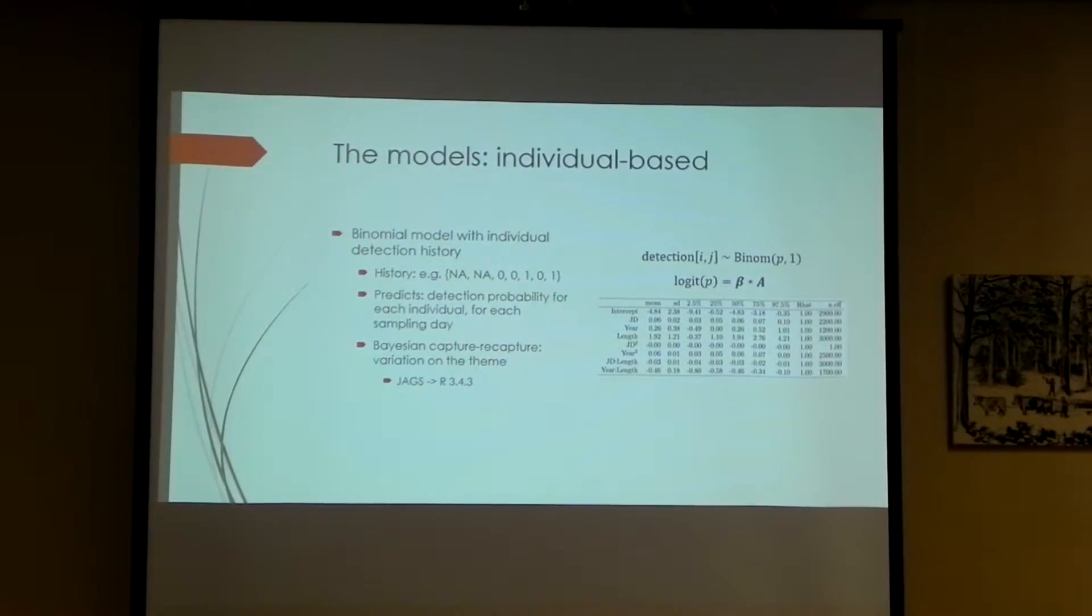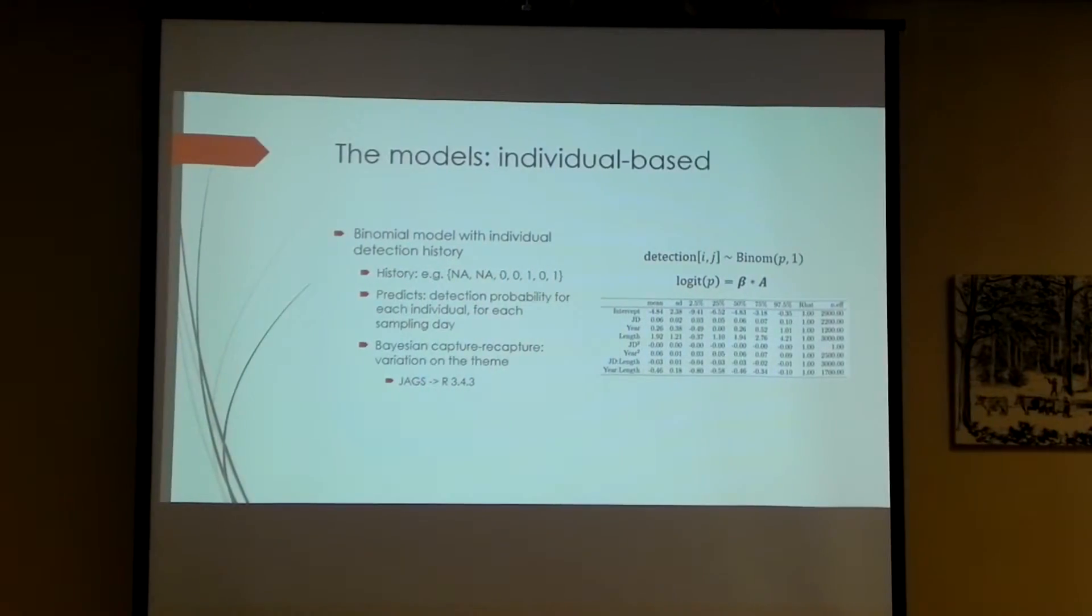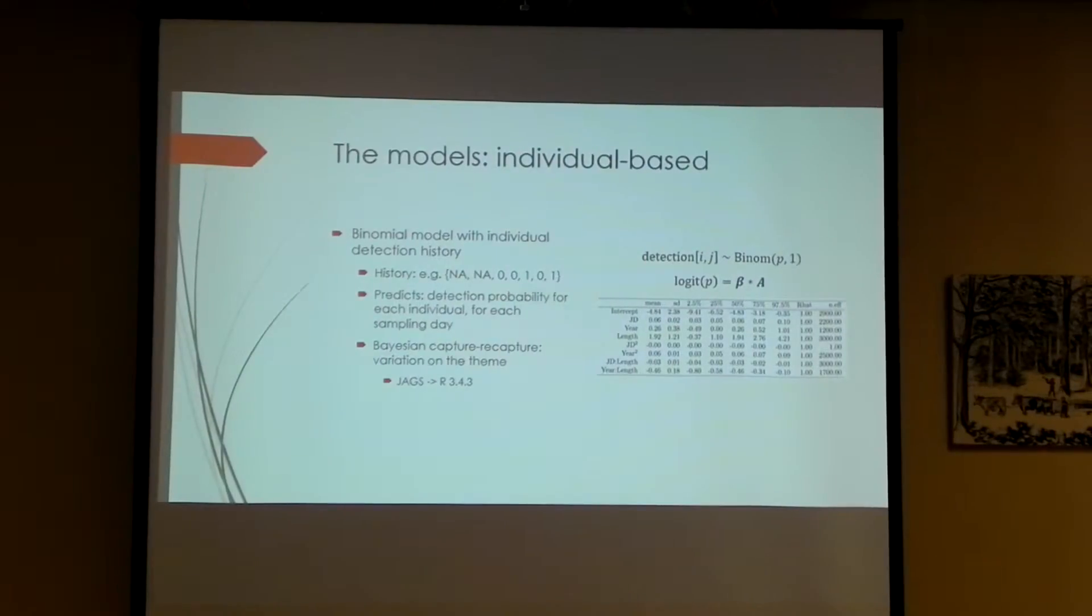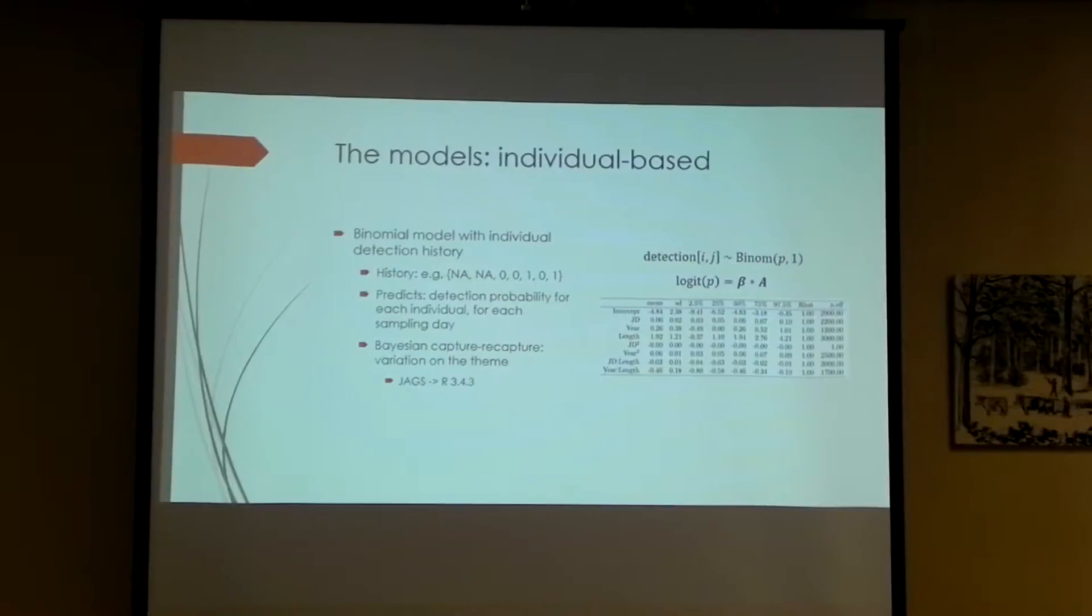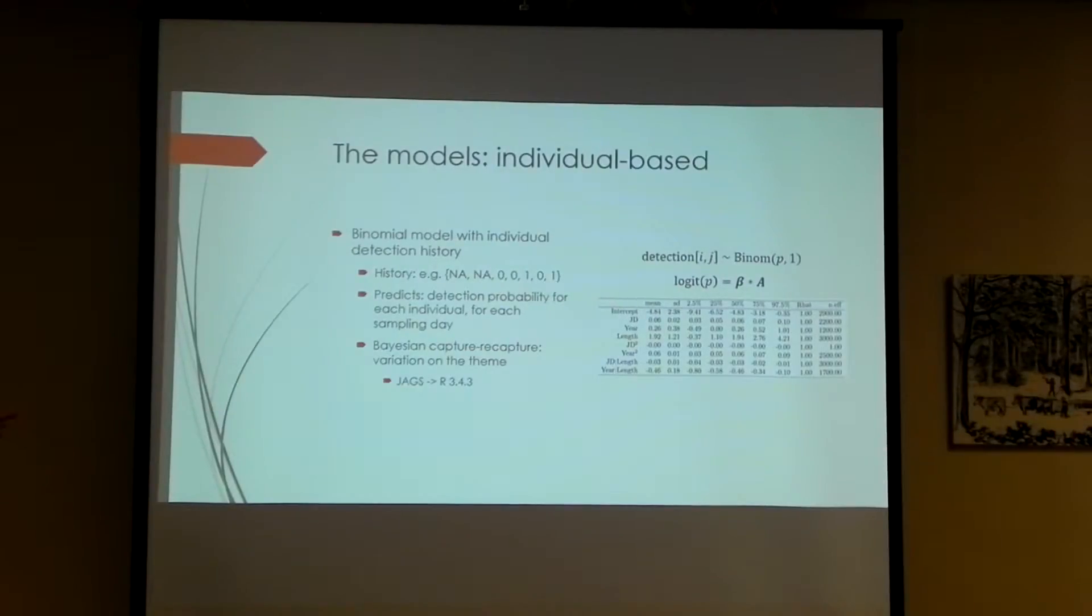So you can see the structure of the model is over there on the right. The full equation isn't written out mainly just because it's hideous and huge. So it's a binomial model. The detection that you see there, the i and j, that's fish i on day j. And that p1, that's detection probability and then one trial. We're looking for these individual fish. And the way that we structure these data to work with this model is the detection history of individuals. I have an example there. The NAs are just to show that different fish were tagged at different times. So sometimes the fish would show up as an NA. Like if it's not tagged yet, it's not a trial. So, and then this model, it predicts the detection probability for each, for every individual, for every sampling day. And I formulated this model as a Bayesian capture-recapture. It's sort of a variation on the theme of the capture-recapture model. And I ran this one in JAGS. 10,000 iterations only took about five minutes, which I was very pleased. I've run some before and it took like six hours.